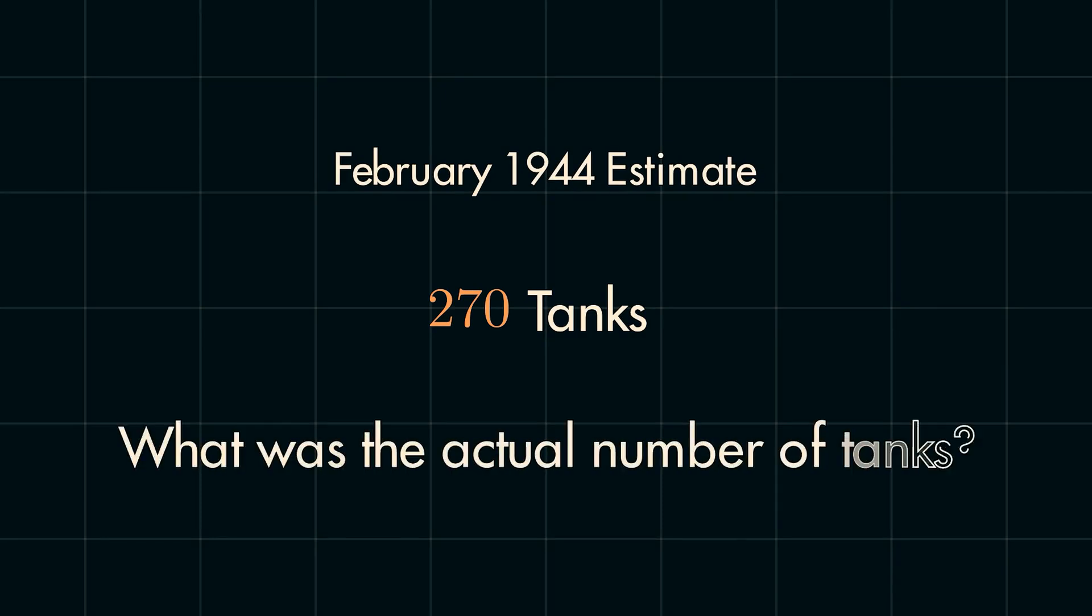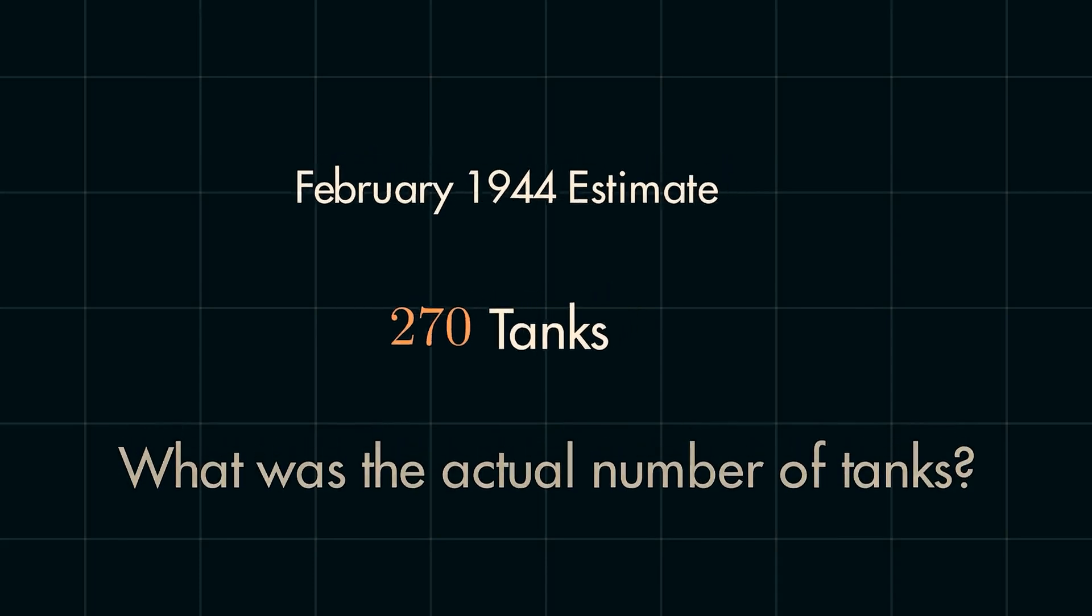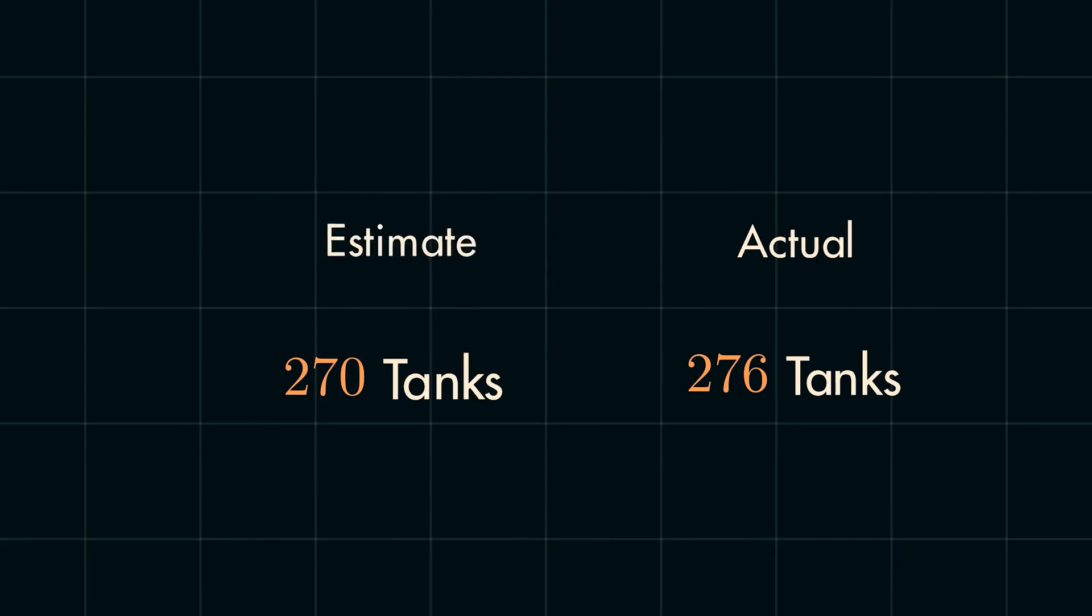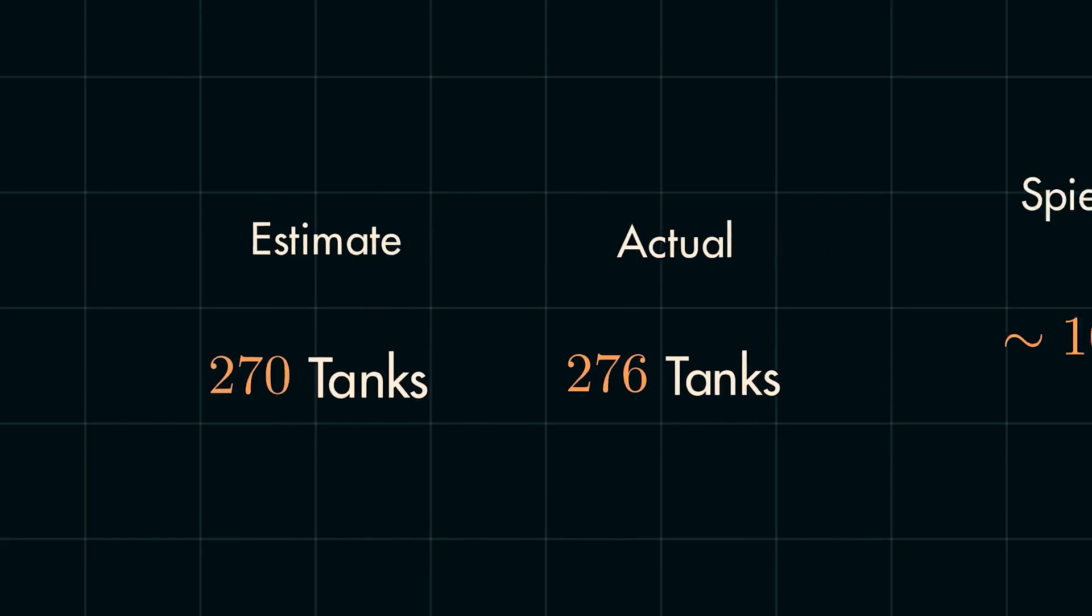What was the actual number of tanks produced, you ask? The Germans' famously meticulous documentation provided the answer after the war with 276. The great accuracy of these estimates is made only more impressive knowing that the Allies' best spies estimated Panther production to be over 1,000.